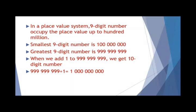In the place value system, a nine-digit number goes up to the hundred millions. It means in a nine-digit number we can count up to hundred million. The smallest nine-digit number is one hundred million. The greatest nine-digit number is 999,999,999. When we add one to this number we get a 10-digit number, and that 10-digit number is called one billion.